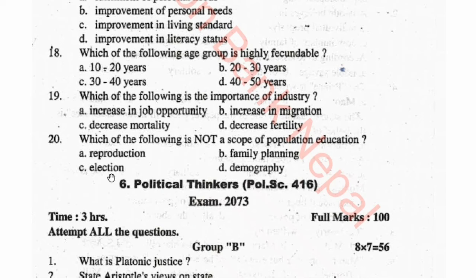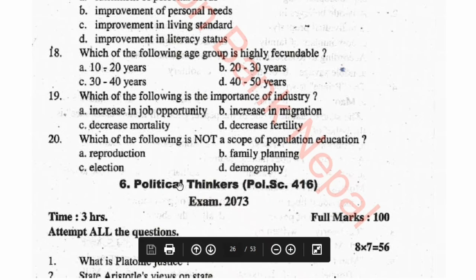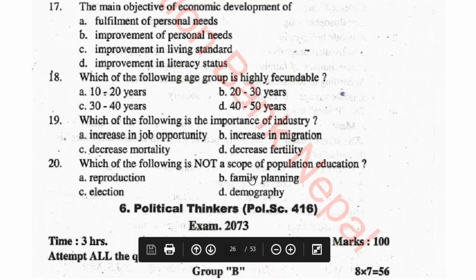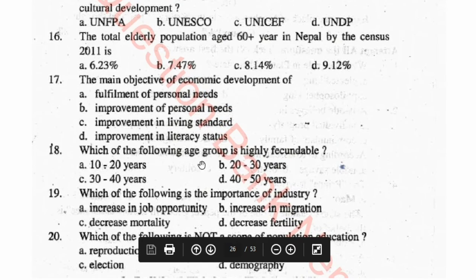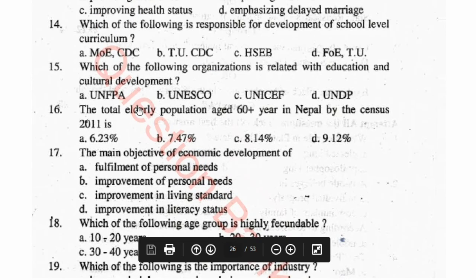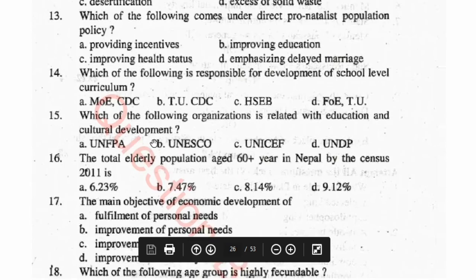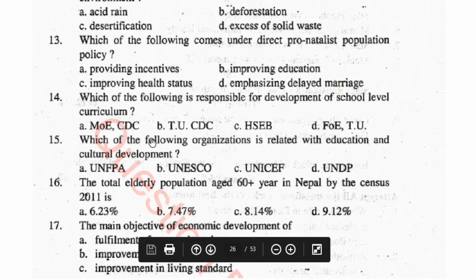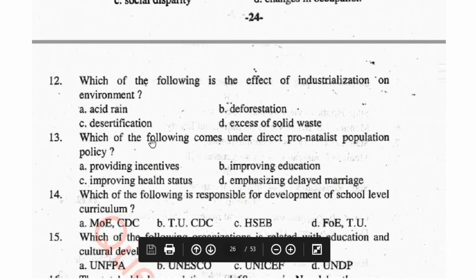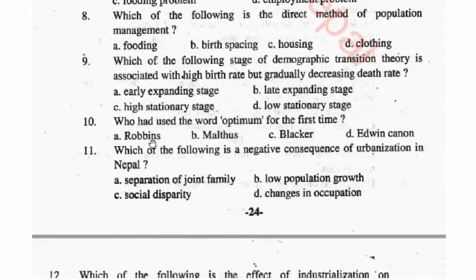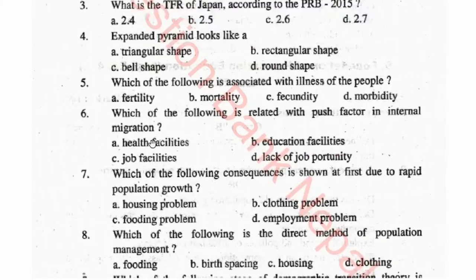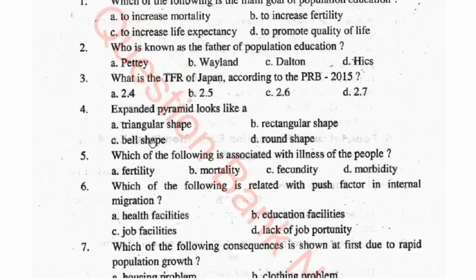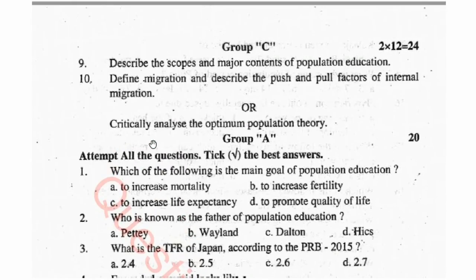Question 19 options: Reproduction, Family Planning, Election, Demography. This concludes the objective questions of population education.